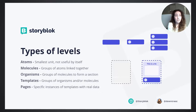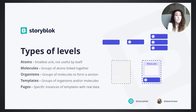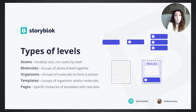Then you have the template, which is just the skeleton of your page. You are combining molecules and organisms in a page but without real content. To have the real page, you need real data. In the page you call the API and return everything to the template, and the template will fulfill the organisms, the molecules, and the atoms, giving you the real content in your page.